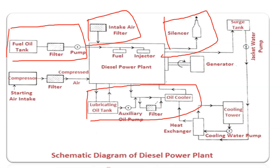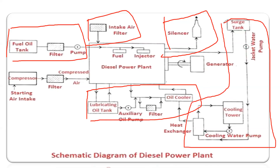Next is the cooling system. In the cooling system, we use water as a coolant to maintain low temperature in the diesel engine. The last component is the starting system. In the starting system, we use an air compressor — we use high-pressure compressor to start the diesel power plant — because initially the diesel power plant is not a self-starting power plant.